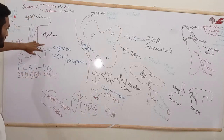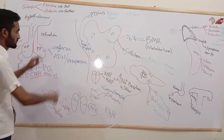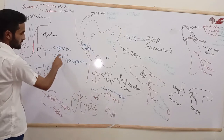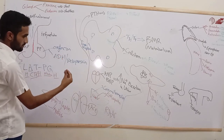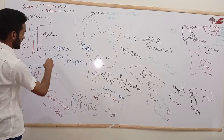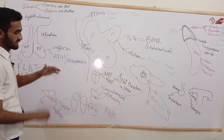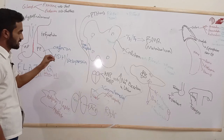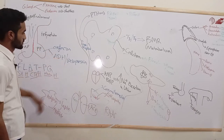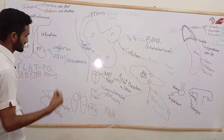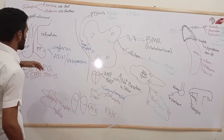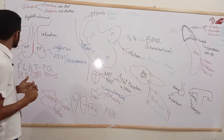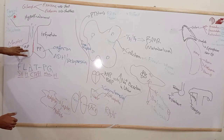The posterior pituitary is an extension of the hypothalamus. It secretes two types of hormones: oxytocin, related to pregnancy maintenance, and ADH, which acts on the renal tubule or kidney to conserve water and decrease urine secretion.